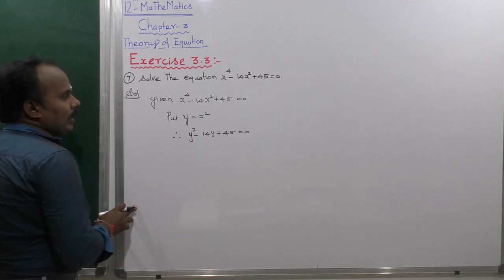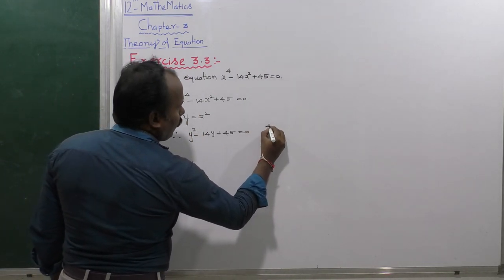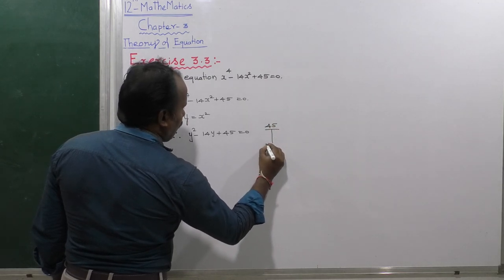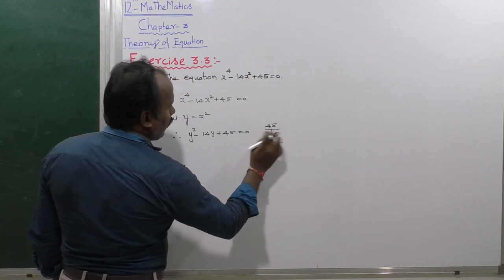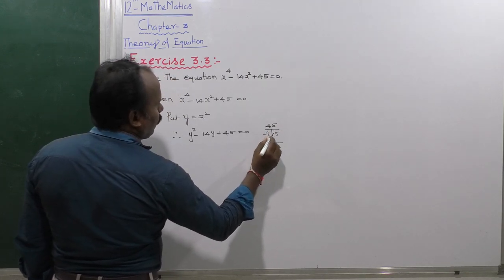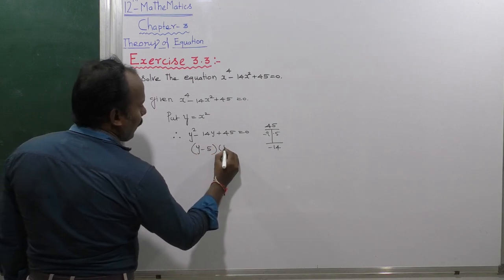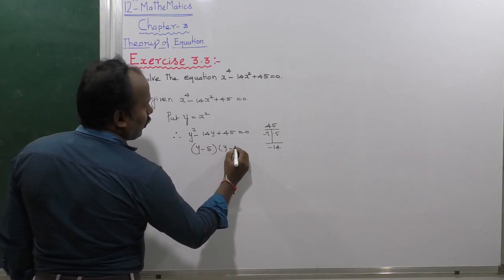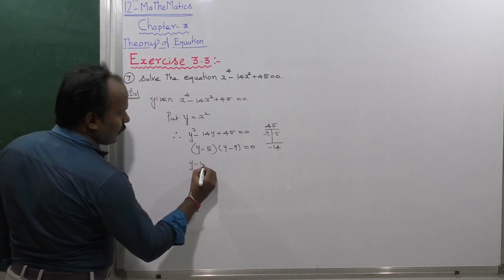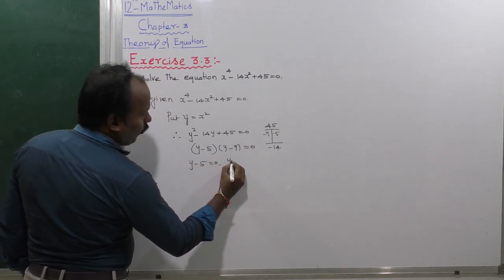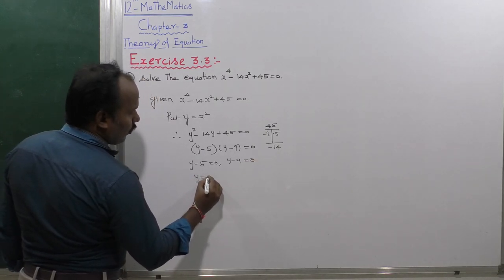For factoring: 45 multiplication gives 45, and addition is minus 14. Nine fives are 45, so both factors are minus — giving y minus 5 into y minus 9 is equal to 0.